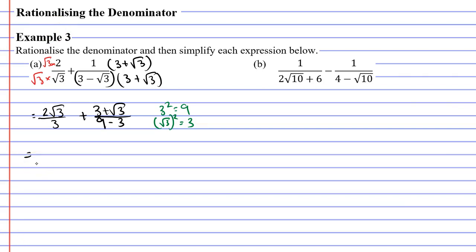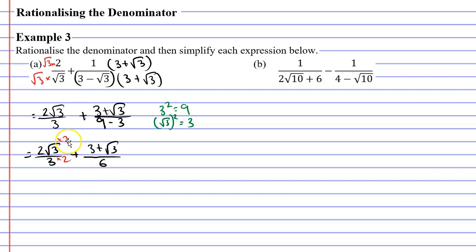We'll keep our first fraction as two root three over three. For our second fraction we subtract three from nine, so the numerator remains as three plus root three and our denominator is six. Now to add the two fractions we need the denominators to be the same. Our first denominator is three and our second is six, so we double the first fraction: two root three times two gives four root three, and three times two is six.